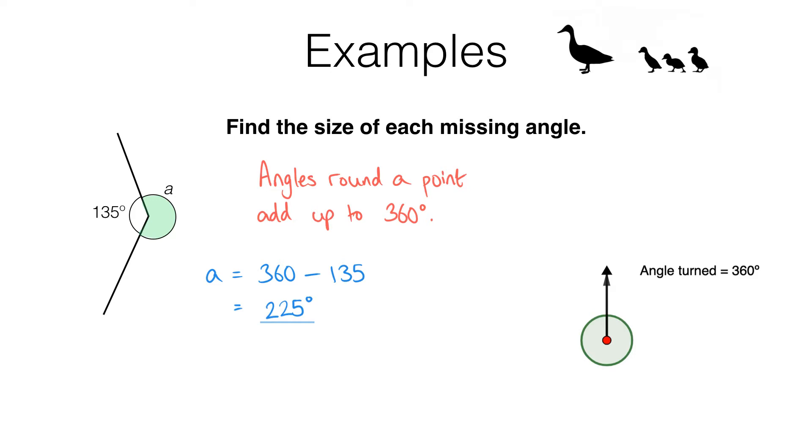Also it's worth noting that this works even when you've got more than two angles around a point. For example in this diagram we have one, two, three, four angles around a point, and that means these four angles, whatever they are, must add up to 360 degrees.